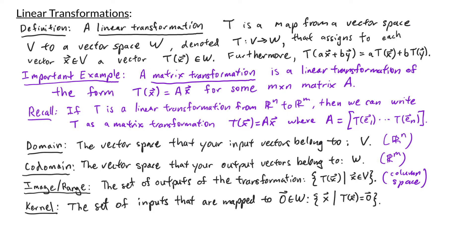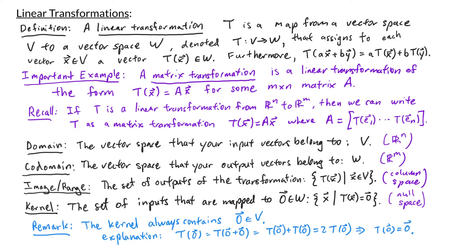Lastly, we have the kernel. This is the set of input vectors that are mapped to the zero vector in your codomain. In set notation, this is the collection of x's such that T of x is the zero vector. When we're working with matrix transformations, this is referred to as the null space. One thing to note is that your kernel always contains the zero vector, but sometimes it may have more than just the zero vector.